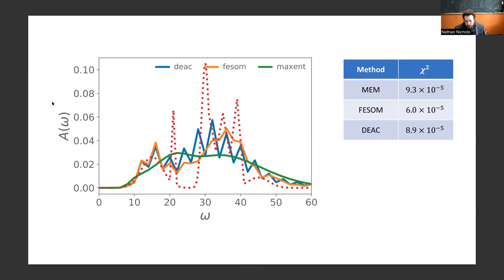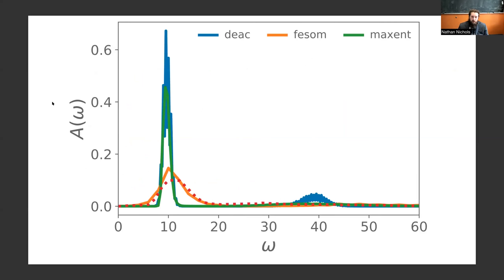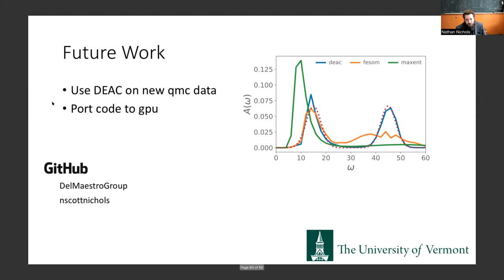What about real quantum Monte Carlo data? The red dashed line is for experimental data for bulk helium at 1.2 kelvin. We collected some quantum Monte Carlo data for bulk helium and ran these methods on those. As you can see, differential evolution (the DEAC method) and maximum entropy (max ent) both picked out this peak about the same intensity in the same location. But DEAC also picked out another peak around 40. FISOM got the peak in the same location, but it was a little more spread out. Those are the three methods in a nutshell, and the results.